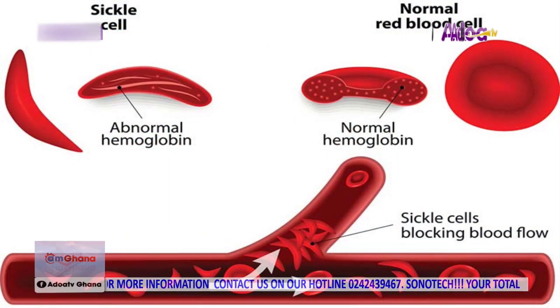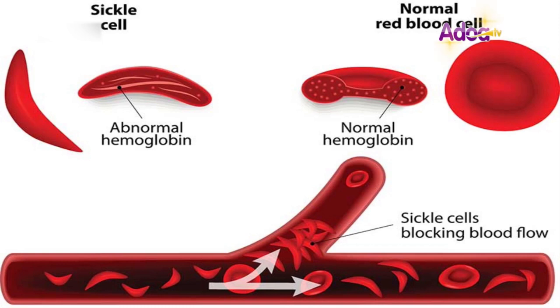When the sickle-shaped cells get to the smaller blood vessels, they get stuck to each other. Because of their nature, they are not able to pass through the smaller blood vessels. This occludes or blocks that particular blood vessel, so blood doesn't flow to where it's supposed to go. For example, if there's a block at the wrist level, blood cannot flow downwards, causing pain and other problems at the distal parts.